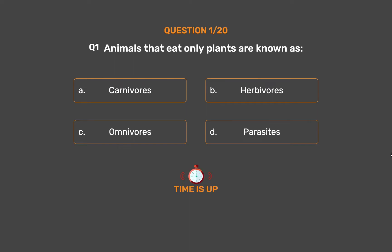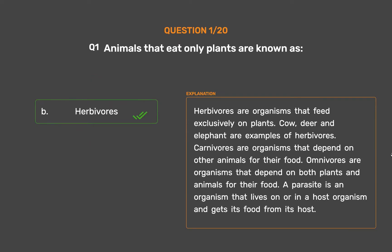The correct answer is Option B, Herbivores. Herbivores are organisms that feed exclusively on plants. Cow, deer, and elephant are examples of herbivores. Carnivores are organisms that depend on other animals for their food. Omnivores depend on both plants and animals. A parasite is an organism that lives on or in a host organism and gets its food from its host.